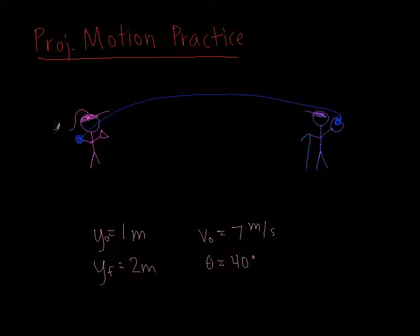So we have initial Y of one meter, which means that from the ground to the ball there's a distance of one meter, and we have final Y of two meters, so from the ground to grandpa's mitt is two meters.